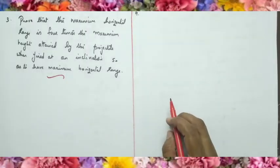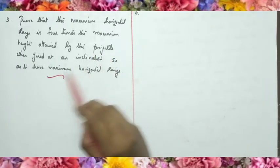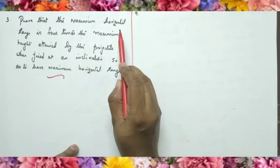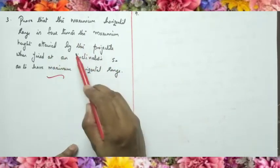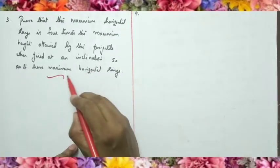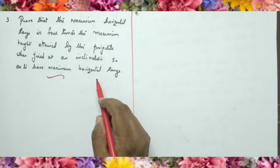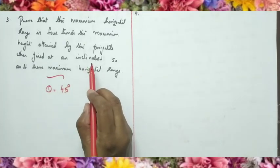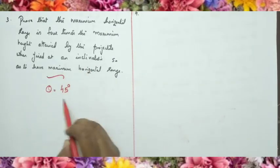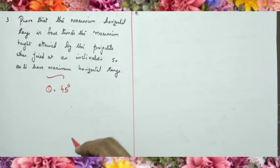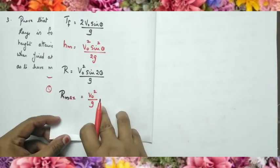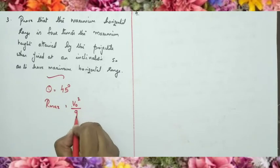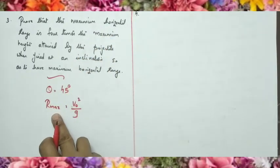Next question: prove that maximum horizontal range is 4 times the maximum height attained by the projectile when fired at an inclination for maximum horizontal range. For maximum range, the angle of projection must be 45°. The maximum range formula is R_max = V₀² / g.